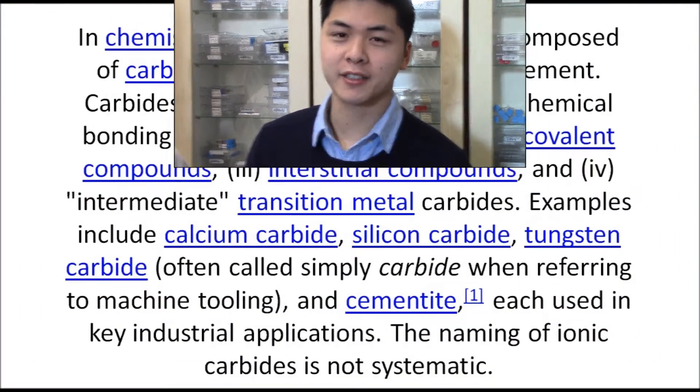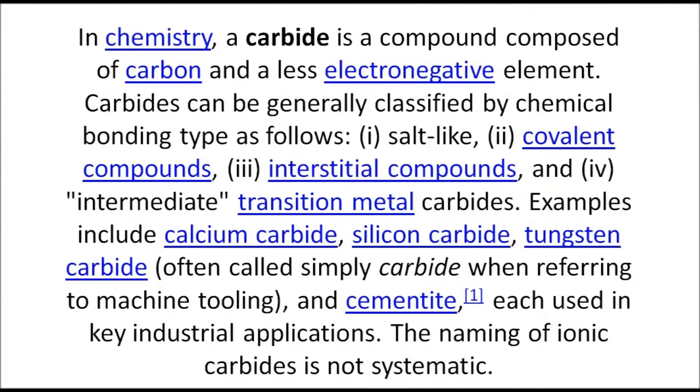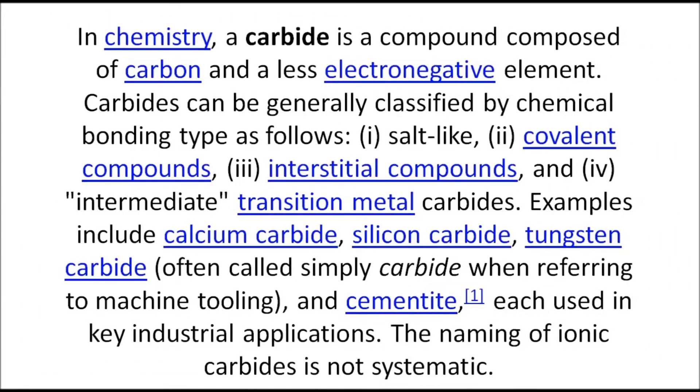We checked the Wikipedia page, but you have to be a chemist to understand it. In chemistry, a carbide is a compound composed of carbon and a less electronegative element. Carbides can be generally classified by chemical bonding type — but that was way too long.